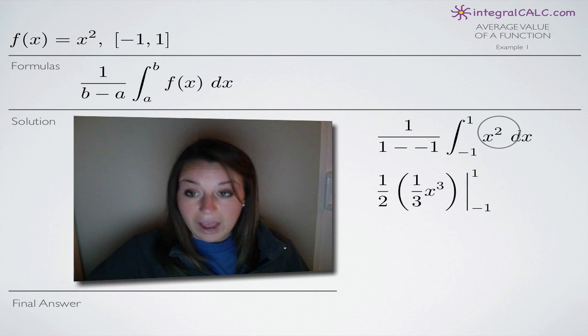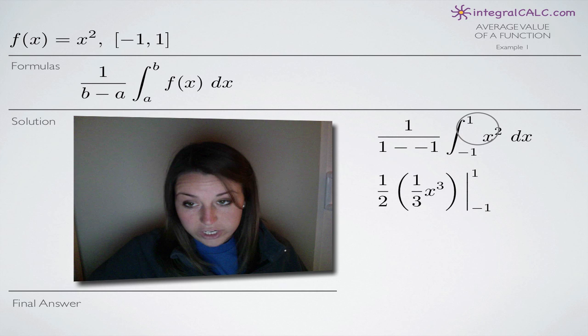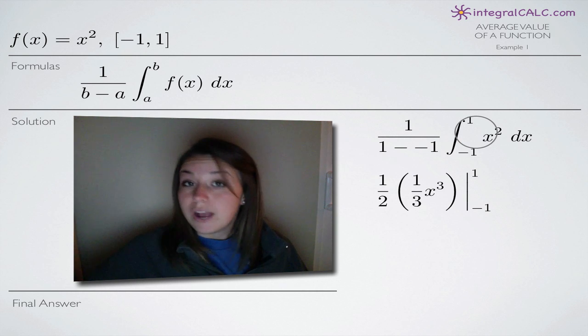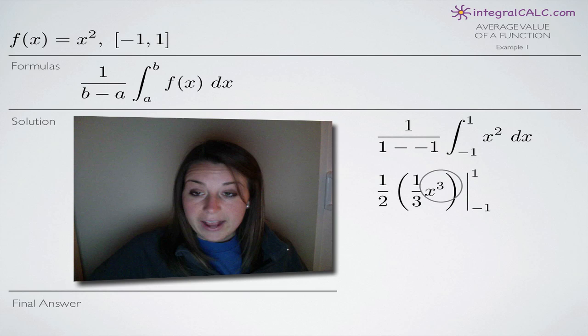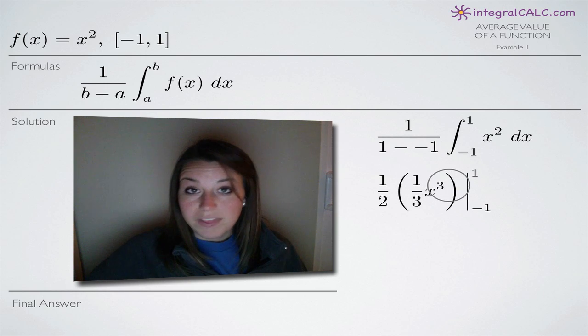of course, add 1 to the exponent. 2 plus 1 is 3 and then we divide the coefficient, which is 1, by the new exponent, 3. So we end up with a 1 third out in front and x cubed and that's our integral.